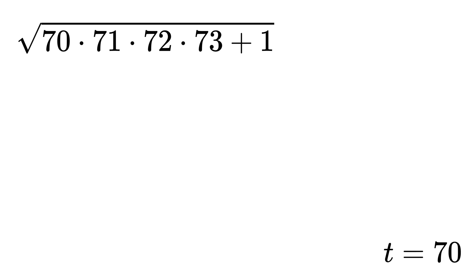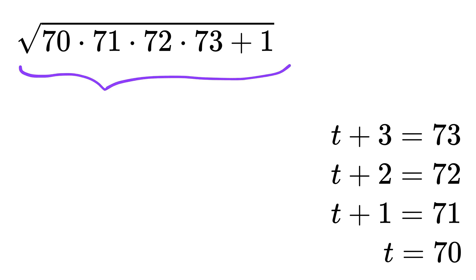What we can do is assume a variable t equals 70, so 71 becomes t plus 1, 72 becomes t plus 2, and 73 becomes t plus 3. It becomes square root of t times t plus 1 times t plus 2 times t plus 3 and then plus 1.